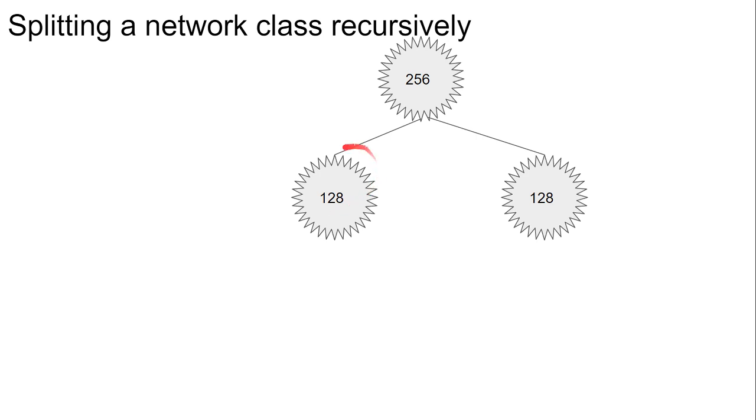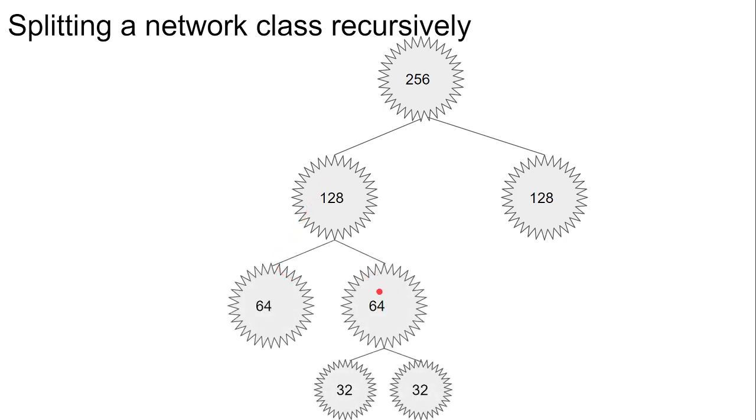But we can recursively split any of those two into smaller networks. For example, splitting the 128 into two 64s, and then splitting a 64 into two 32s.